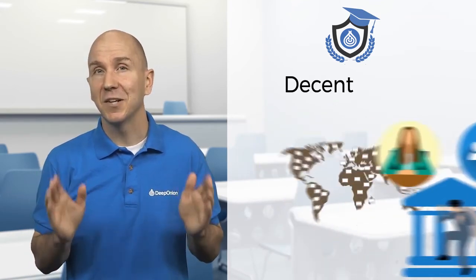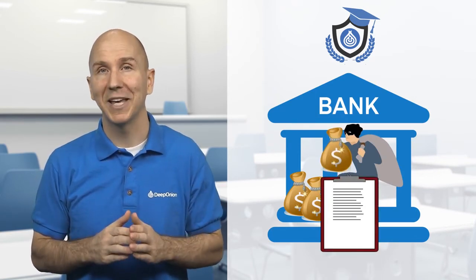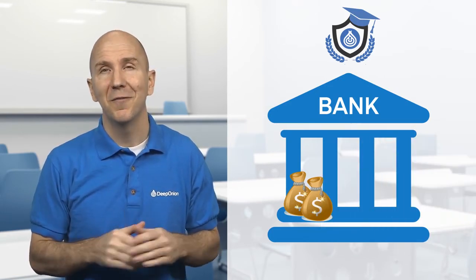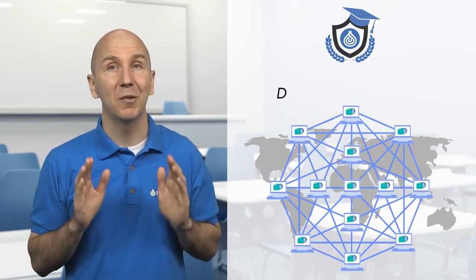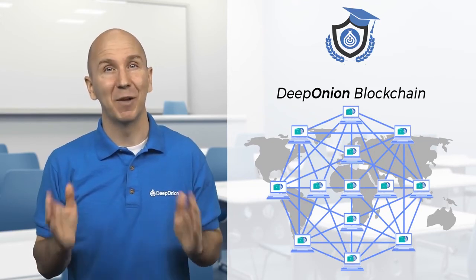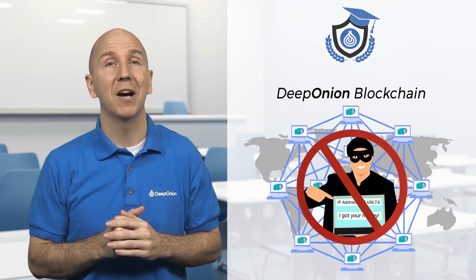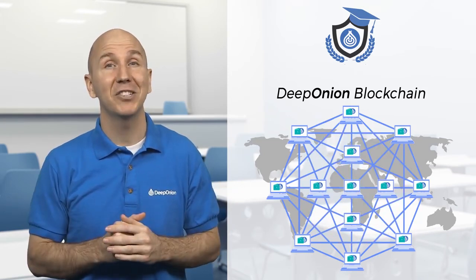If something is decentralized, there are multiple points that do the work. For example, banks are centralized and we have to trust them not to abuse our money, and our personal data must be given to them when we open accounts. This personal data can be misused or abused. For this reason, a decentralized system is much better. Everyone has access to the blockchain and is able to check every change that takes place anytime they want, which makes it impossible to carry out dishonest actions. For this reason, the DeepOnion blockchain is decentralized.